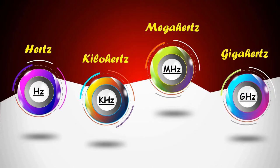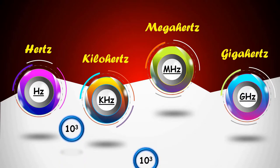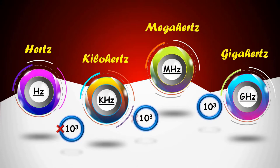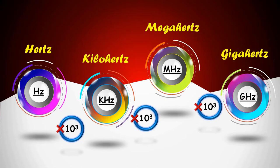There is a difference of 10 to the 3 at each step. When converting from Hertz to Gigahertz, we need to multiply by 10 to the 3 at each step.